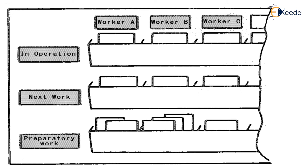For example, suppose there are three workers — workers A, B, and C — which are in operation. In the next work, the preparatory work required is: worker A 2%, worker B 3%, and worker C only 1%. Based upon that, when we go for worker B, we need to ensure that efficient planning is done so that the work is completed in proper time.